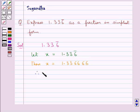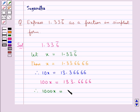From here we get 10x is equal to 13.366666. Then 100x would be equal to 133.6666. Then from here we get 1000x is equal to 1336.6666.